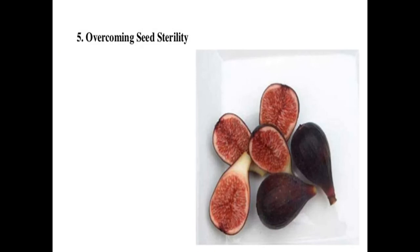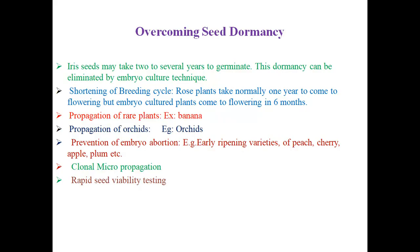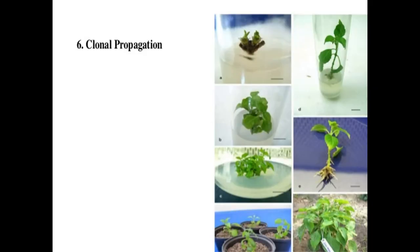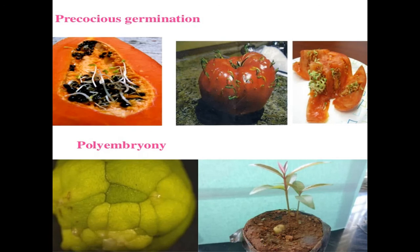Embryo culture can also overcome seed sterility. Examples of overcoming seed dormancy include: Iris seeds may take several years to germinate. For shortening of the breeding cycle, rose plants normally take one year to flower but through embryo culture can flower in six months. For propagation of rare plants — for example, banana and orchids — embryo culture is applied. Other applications include prevention of embryo abortion, early ripening varieties, clonal multiplication, and rapid seed viability testing, all showing better results through embryo culture.